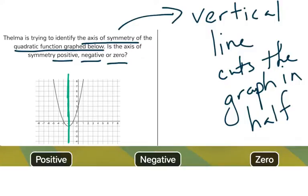That line would be x equals... you can see it's to the left of zero, so it's actually negative two. That is the axis of symmetry, so in this case, the axis of symmetry is negative.